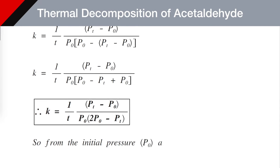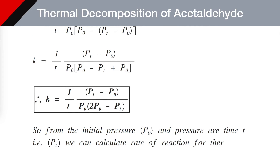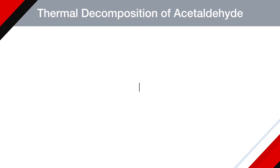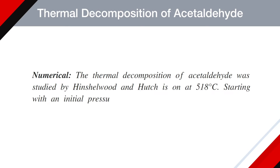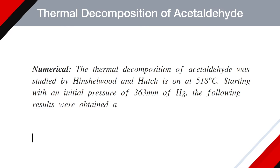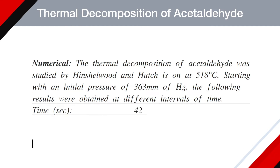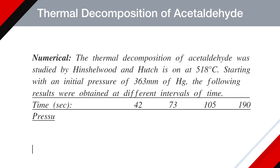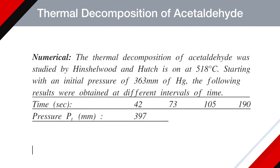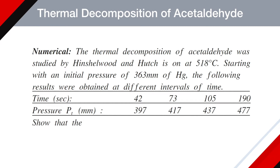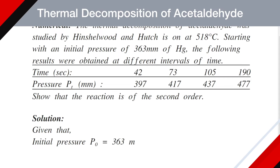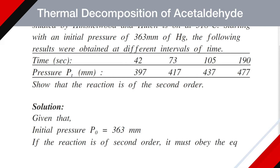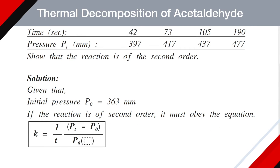So from the initial pressure P₀ and pressure at time Pt, we can calculate the rate of reaction for thermal decomposition of acetaldehyde. Now let's solve a numerical based on this equation. The thermal decomposition of acetaldehyde was studied by Hinshelwood and Hutch at 518°C starting with an initial pressure of 363 mm Hg. The following results were obtained: times 42, 73, 105, and 190 seconds, with pressures 397, 417, 437, and 477 mm Hg respectively. We must show the reaction is of second order using K = (1/T) × (Pt − P₀) / (P₀ × (2P₀ − Pt)).